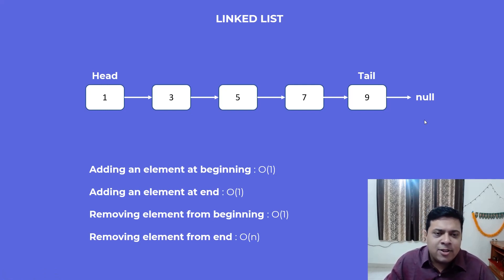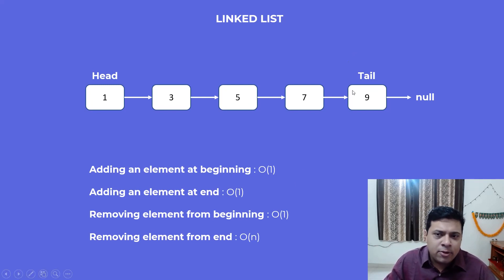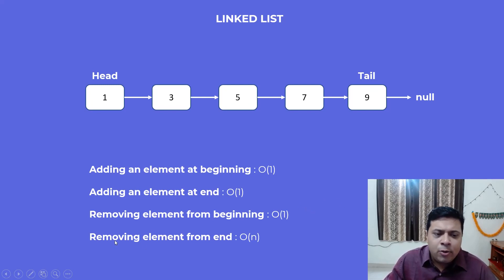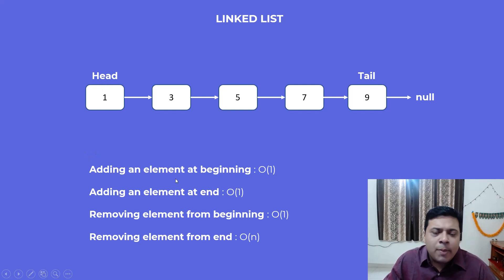Some of the important operations on a linked list are: adding an element at the beginning, which can be done in O(1) constant time complexity; adding an element at the end, also constant time because we can find the tail and add another element after that; removing an element from the beginning, again constant time. The only case that takes linear time is removing an element from the end — we have to traverse through the linked list to reach the second-to-last element before we can carry out the operation.